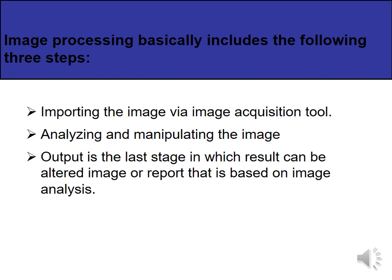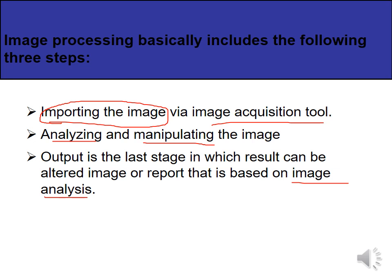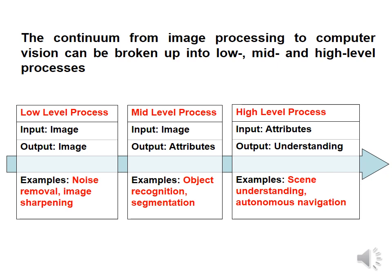There are three basic steps that each image has to undergo during processing. First is importing the image, done via an image acquisition tool. Second is analyzing and manipulating the image. Third is the output stage — image analysis — where information or interpretation is extracted. There is a continuous development from image processing to computer vision, and this whole development can be broken into three categories: low-level process, mid-level process, and high-level process.